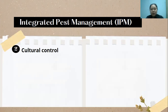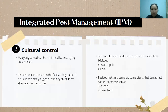For cultural control, we can destroy ant colonies to reduce the spread of the mealybug. We can also remove field weeds to destroy alternate food resources for the mealybug, and remove alternate host plants in and around the crop fields, for example hibiscus, castor, apple, and guava. We can also plant attract plants such as marigold and castor bean to attract ladybug beetles and parasitic wasps.